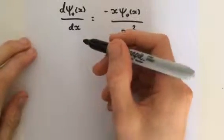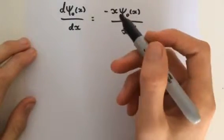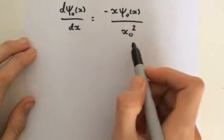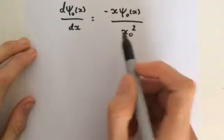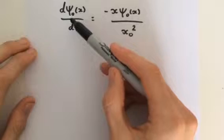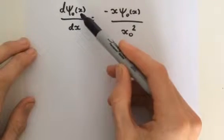Hello, so in part one of my series on the quantum mechanical harmonic oscillator we formed this differential equation and we were trying to solve for the wave function for the ground state, psi_0(x).